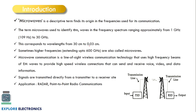Sometimes frequencies higher than 30 gigahertz, extending up to 600 gigahertz, are also termed microwaves. Microwave communication follows a line-of-sight communication technology. As shown in the diagram, there is a transmitter at one end and a receiver at the other, with transmitter and receiver antennas in between. Communication happens in a straight line from transmitter to receiver — this is called line-of-sight communication.